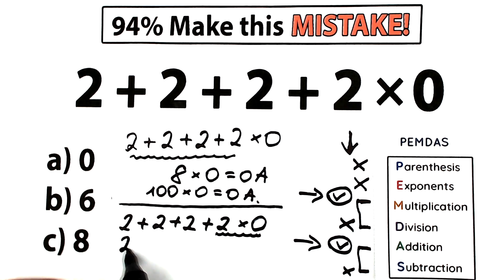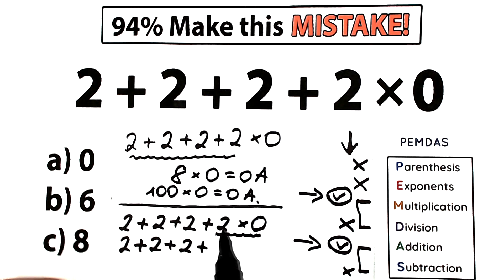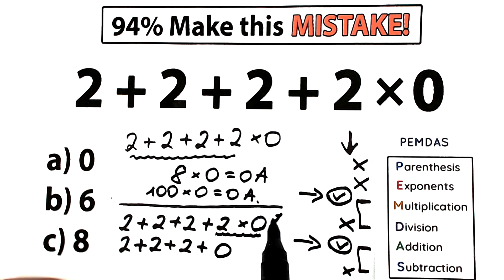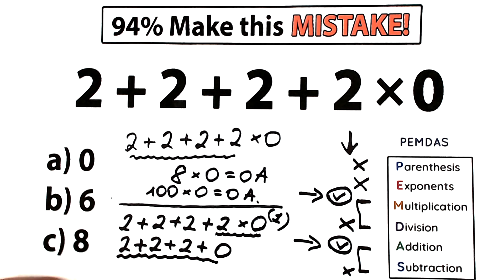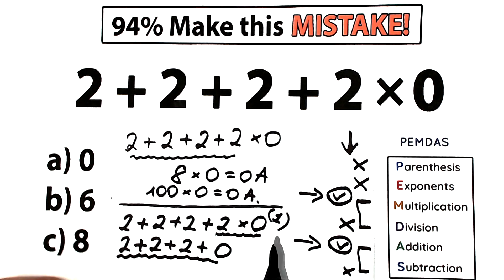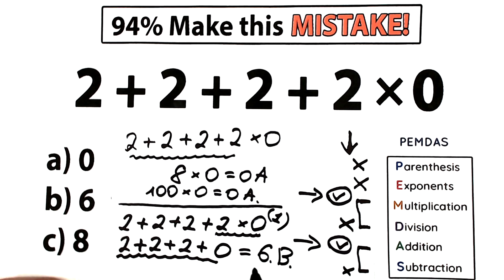So here's our addition — we don't touch those signs yet. We have 2 plus 2 plus 2, plus 2 times 0 equals 0. That is our first step: multiply 2 times 0 to get 0. The second step is addition: 2 plus 2 plus 2 plus 0 equals 6 — option B. So the correct answer is 6, option B.